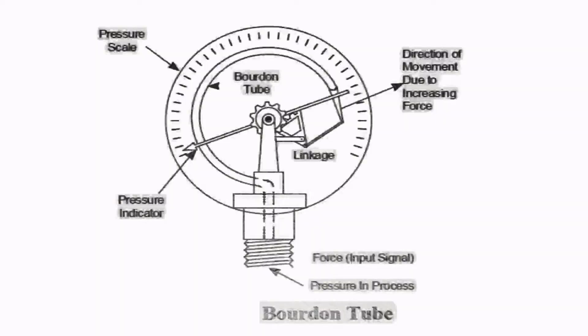Looking at the Bourdon tube — it was invented by Eugen Bourdon, a French watchmaker and engineer. It is a C-type gauge. The pressure goes inside the C-type Bourdon tube, and it has a link mechanism that connects between the C-type Bourdon and a quadrant-pinion arrangement, which moves to and fro. This quadrant-pinion arrangement is connected to a pointer that moves across the dial gauge.